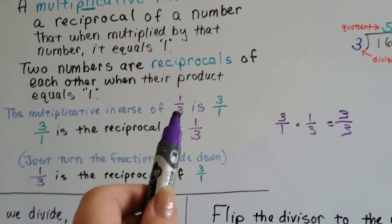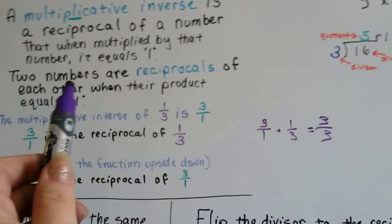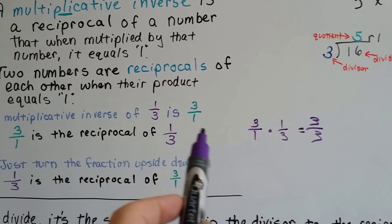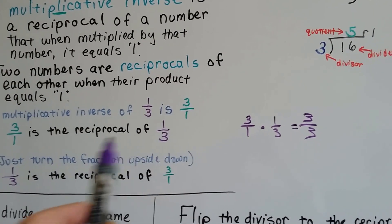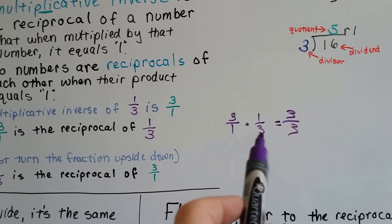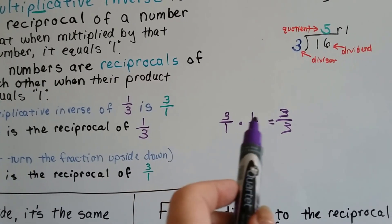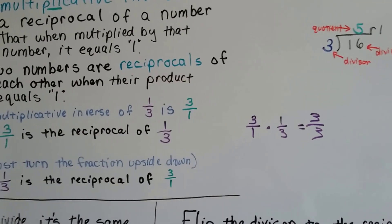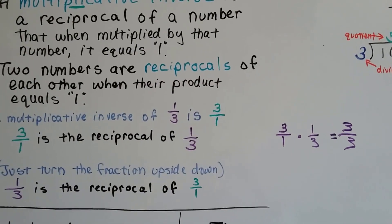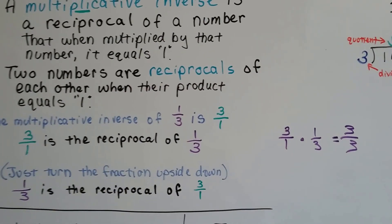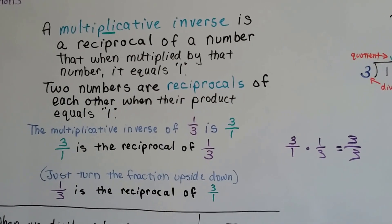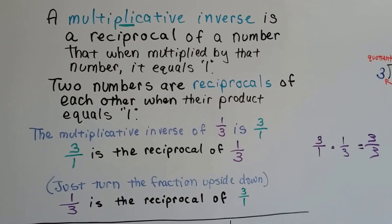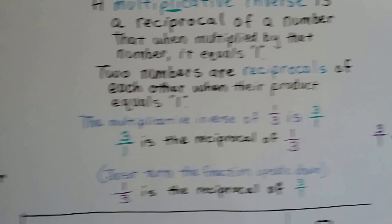What happens when we multiply? It says multiply by that number and it equals 1. What happens when we multiply 3 over 1 by 1 third? 3 times 1 is 3, and 1 times 3 is 3. When the numerator and denominator are the same, it equals 1. Just flip that fraction upside down.